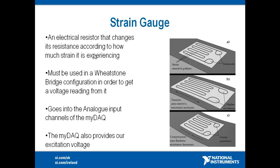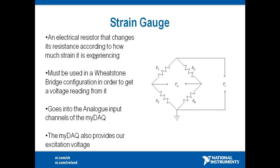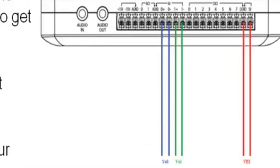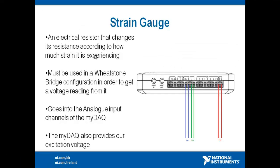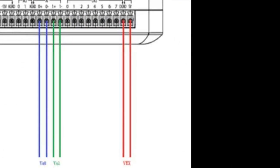So a strain gauge is basically an electrical resistor, which varies depending on how much strain it encounters. By putting it in a Wheatstone bridge configuration, we can measure the imbalance that this bend causes as a voltage. This voltage can then be passed into the analog input channels of our NI-MIDAC, where it can be translated to our computer. The NI-MIDAC also provides an excitation voltage to this circuit, which is essential in generating the voltage which we're eventually going to read.